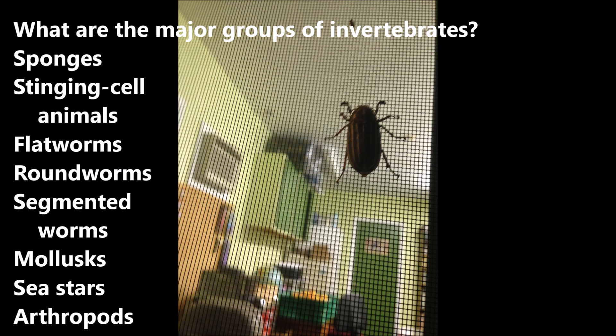What are the major groups of invertebrates? Sponges, stinging-cell animals, flatworms, roundworms, segmented worms, mollusks, sea stars.